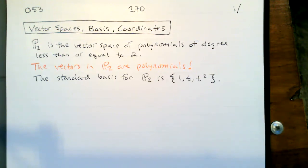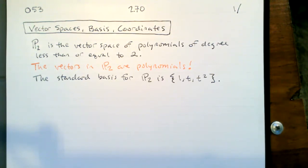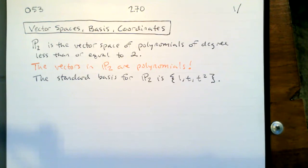Our favorite example is to use Pn. In this case I want to use P2 because I need a nice little three-dimensional vector space. P2 is the vector space of polynomials of degree less than or equal to 2. So the vectors in P2 are polynomials.